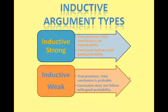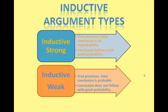Let's now look at inductive argument types. There are two kinds: one where the inference between premises and conclusion is strong, and here the conclusion being false is an improbability when the premises are true — the conclusion follows with good probability. When there is a weak link between the premises and the conclusion, a weak inference, it is probable that the conclusion is false — the conclusion does not follow with good probability.